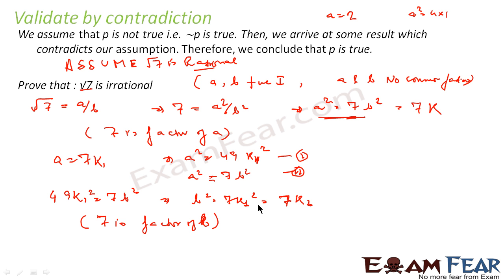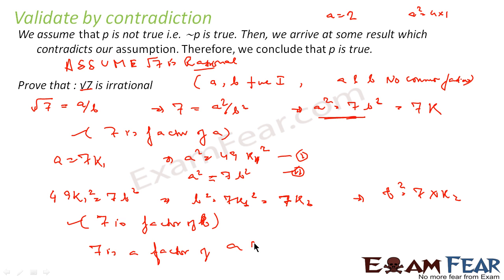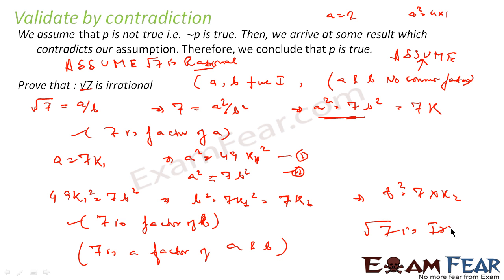We have seen that 7 is a factor of both a and b. That means a and b have a common factor, which is 7. But we had assumed that a and b have no common factor. So we have contradicted our own assumption. Thus we can prove that our assumption that √7 is rational is incorrect. Therefore √7 is irrational.